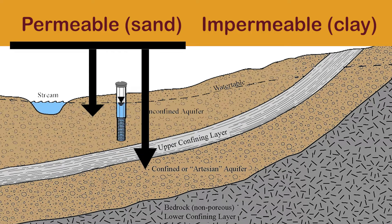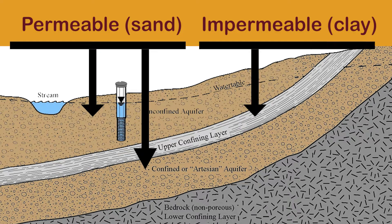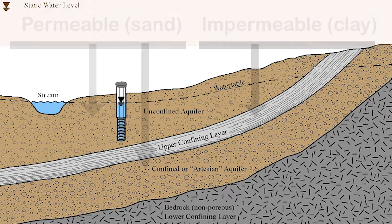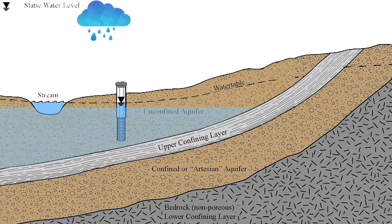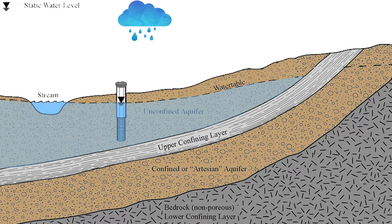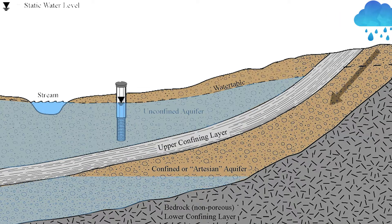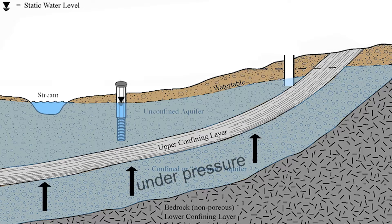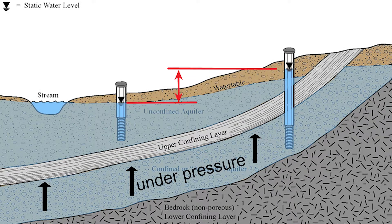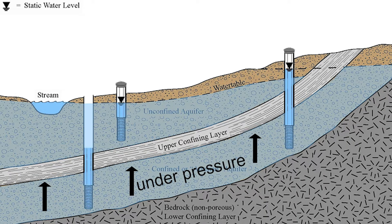Let's say we have two permeable layers with an impermeable layer in between. If a permeable layer holds water, it is called an aquifer. Each aquifer might have its own rainwater catchment area. Water in a second or deeper aquifer could be under pressure, which is why water in boreholes that reach a second aquifer could rise higher than in shallow wells — water might even flow out without a pump, although this is a very rare situation.